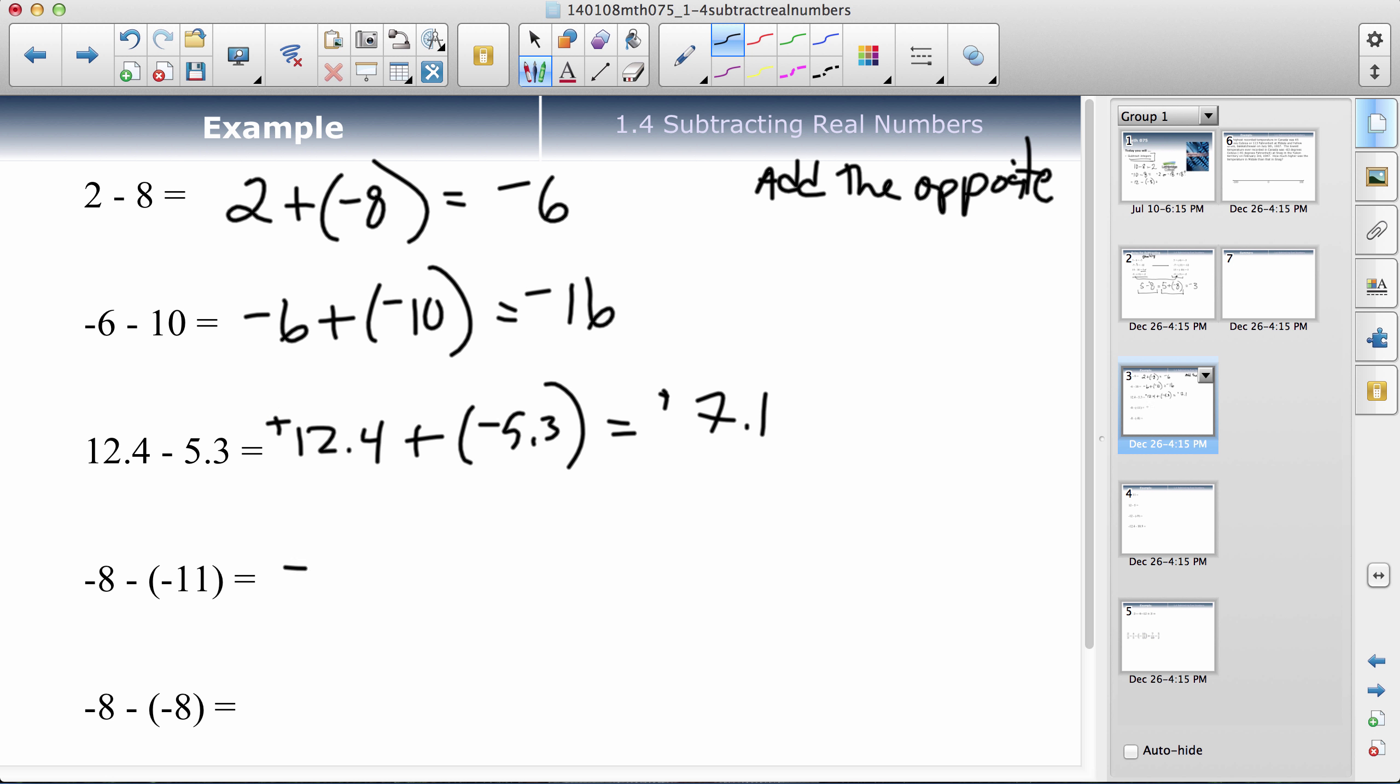Next one, negative 8 plus a positive 11. Different signs, so I subtract. The thing furthest from zero is the positive number, so my answer's positive. Last one, minus 8 plus. This is a negative 8. It changes to a positive 8. So negative 8 plus 8. The difference signs, so you subtract. 8 minus 8 is 0, and 0 doesn't have a sign.